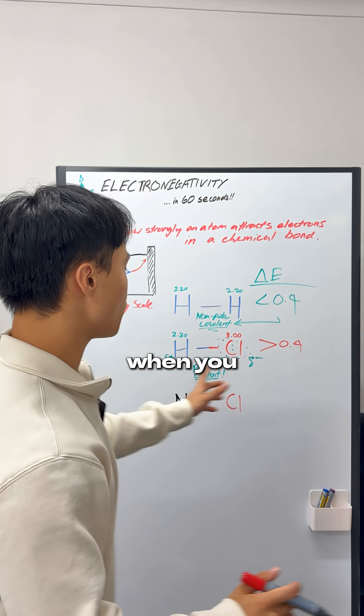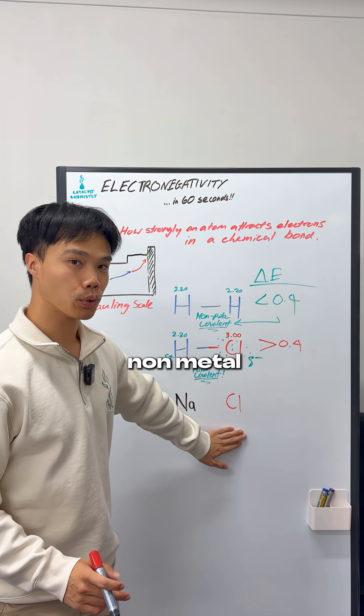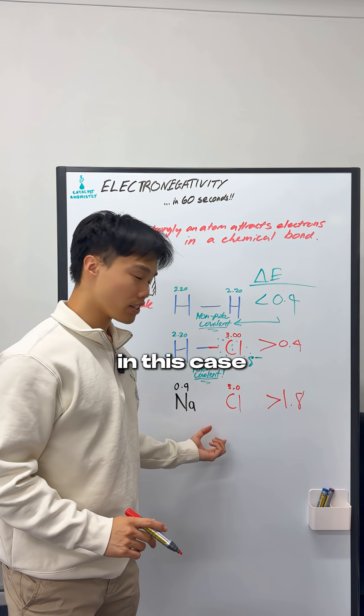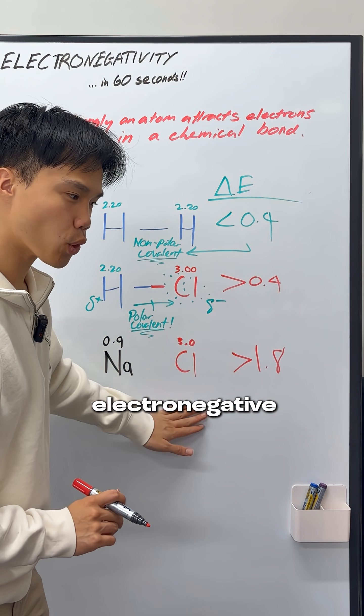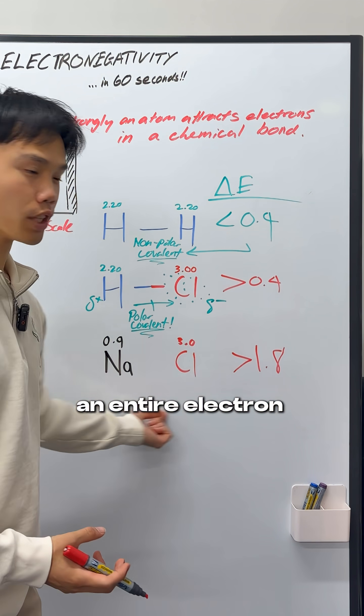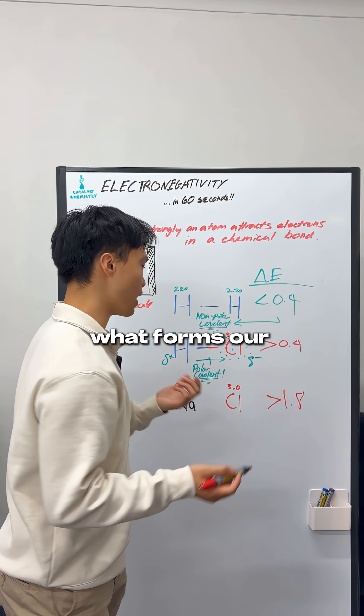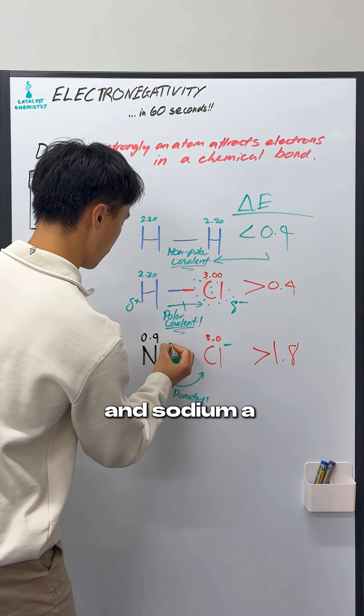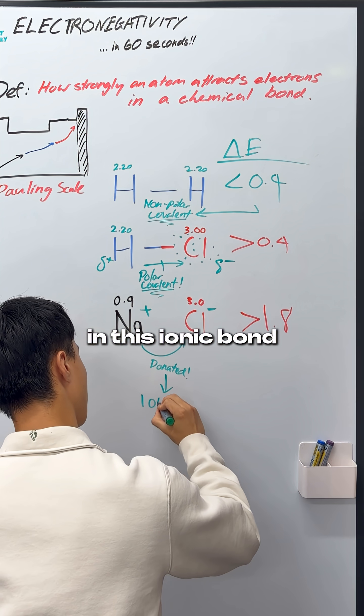And the final case is when you have a metal and a non-metal, and the difference is greater than 1.8. In this case, because the chloride is so much more electronegative, it actually has the ability to pull away an entire electron from the sodium, and this is what forms our ionic bond donation. And that gives chloride a negative charge and sodium a positive charge in this ionic bond.